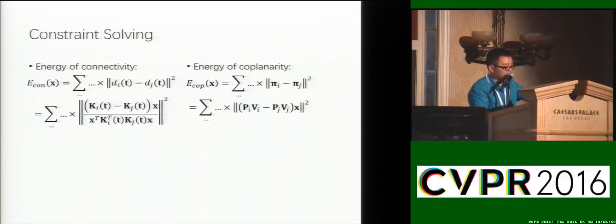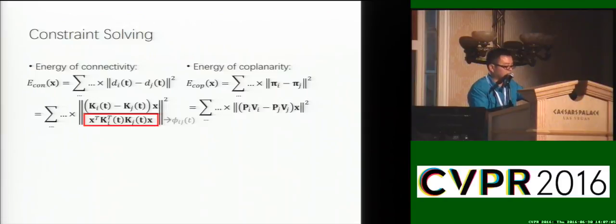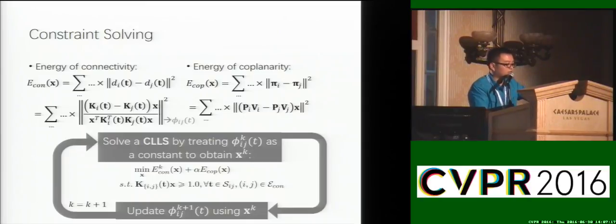With these properties, we can formulate the energy of connectivity as a sum of squares, where each squared term has a linear numerator and a quadratic denominator. The energy of coplanarity can be directly formulated as a sum of linear squares. Finally, we use alternating optimization to solve a constrained linear least squares problem in each iteration to converge to the final solution. After this, the optimal parameters of all vertices can be retrieved and the model can be reconstructed.